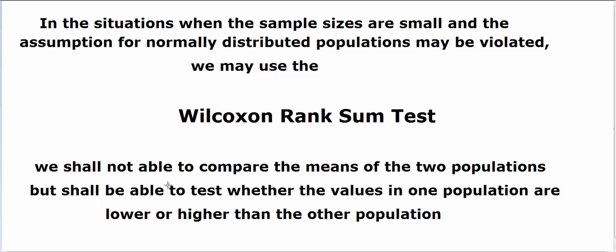So in such situations, when we have sample sizes really small, and the assumptions for the normally distributed population may be violated from the indications from this sample, one of the ways to handle that is this test, it is called Wilcoxon rank sum test.